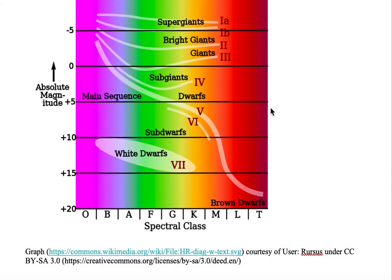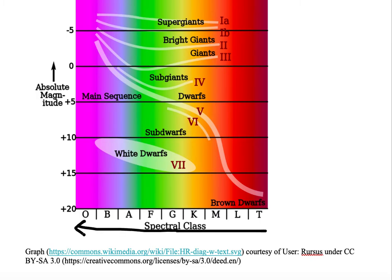Here we're looking at an HR diagram. In this particular version of the HR diagram, we have spectral class listed on the bottom, and we have absolute magnitude listed on the vertical axis. Temperature increases to the left, and you can see that the diagram is colorized in the rainbow of colors — red, orange, yellow, green, blue, indigo, and violet — corresponding to the spectral class T-L-M-K-G-F-A-B-O going from right to left, which is also in the direction of increasing temperature.